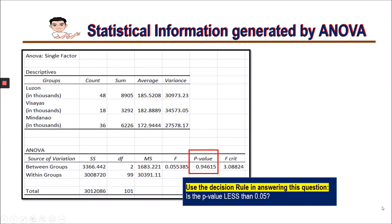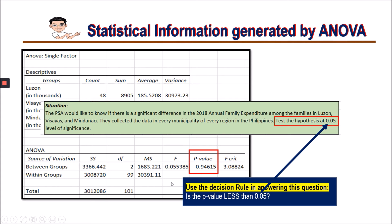The next result to analyze is the ANOVA table. We compare the p-value to 0.05, because the problem tasks us to test the hypothesis at a 0.05 level of significance. Comparing the computed p-value to 0.05 will tell us if there is a significant difference in the annual family expenditure among the families in Luzon, Visayas, and Mindanao.